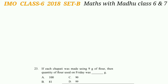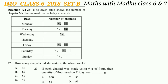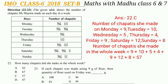Questions 22 to 23 are based on a table showing the number of chapatis Mrs. Sama made each day of the week. Question 22: How many chapatis did she make in the whole week? Monday: 9, Tuesday: 10, Wednesday: 5, Thursday: 4, Friday: 9, Saturday: 12, Sunday: 8. Total = 9+10+5+4+9+12+8 = 57. The answer is option C.